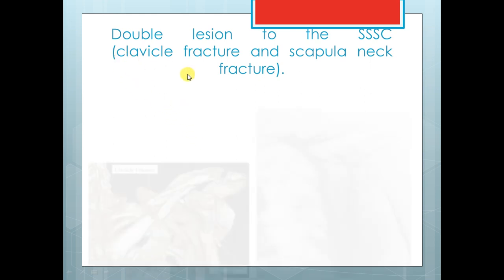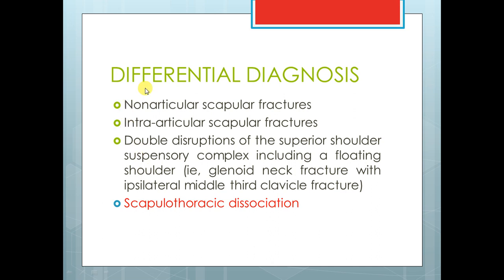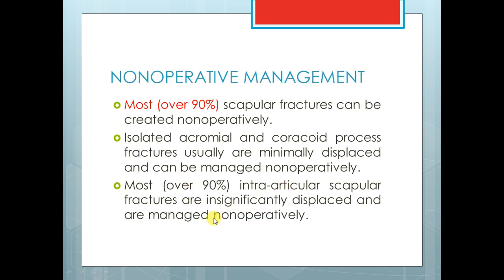Another indication is the floating shoulder with its common form — glenoid neck with clavicle fracture. In the differential, you must differentiate between extraarticular and intraarticular fractures, floating shoulder, and don't forget scapulothoracic dissociation — we will take another session about this topic.